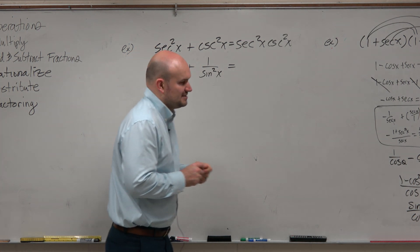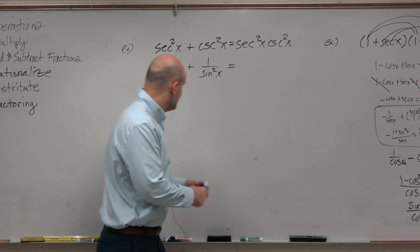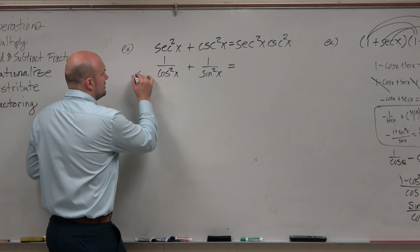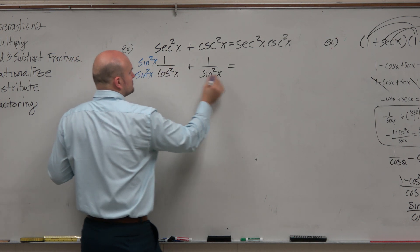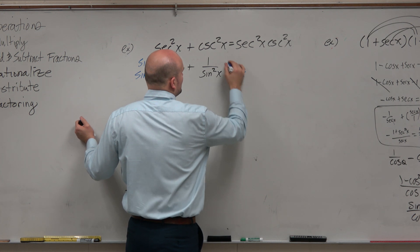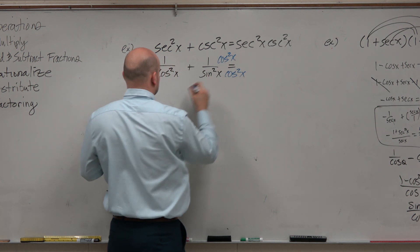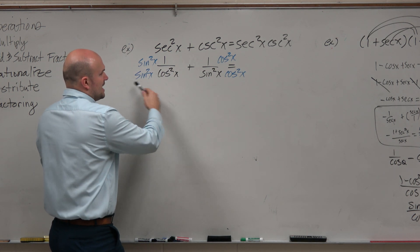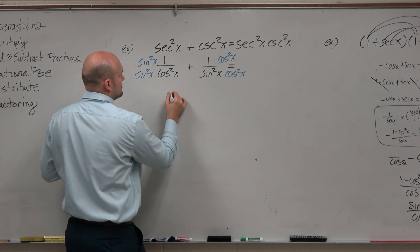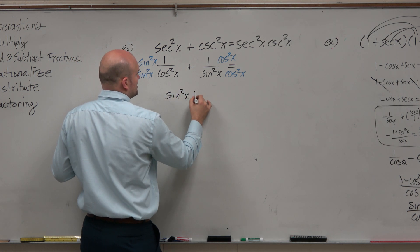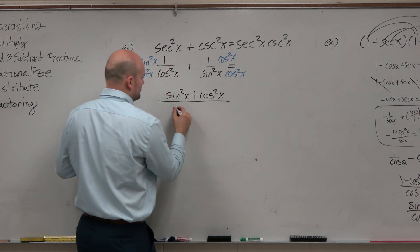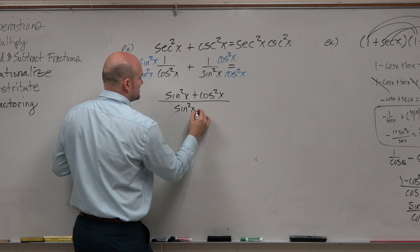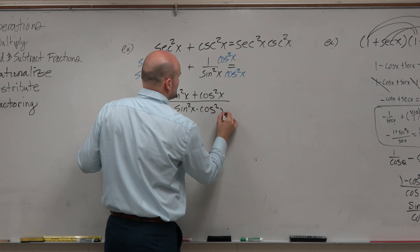So to get common denominators, this is something, again, not our first time we've discussed this. Need to multiply by sine squared of x times sine squared of x, cosine squared of x times cosine squared of x. And now you can see that we have our common denominator. So I'll just write sine squared of x plus cosine squared of x, all over the product of sine squared of x times cosine squared of x.